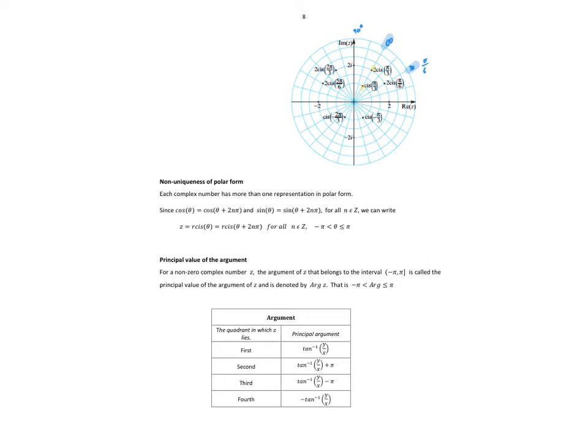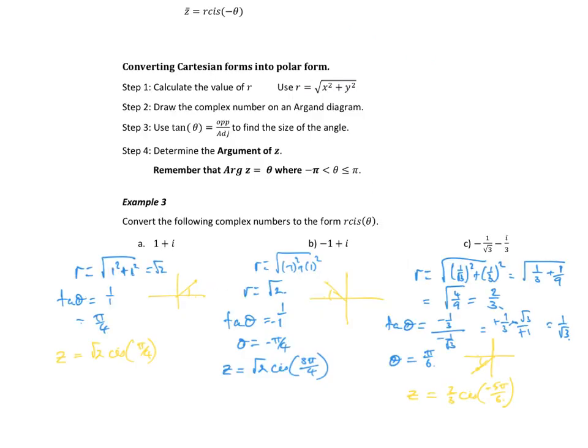Clearly, we can express a complex number in multiple values when we start talking about angles in a circle. So that's when we come up with the concept of the principal argument. That principal argument means we're talking about an angle between negative pi and pi, where pi is inclusive and negative pi is non-inclusive.